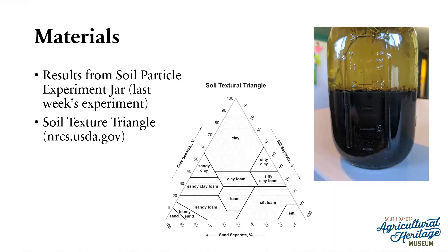The other thing you will need is a soil texture triangle, pictured in the middle of the screen. I got mine from the NRCS website at nrcs.usda.gov, where you can find a soil textural triangle. Today I'm going to show you how to take your results from the experiment and use the triangle to determine your soil type. It looks a little intimidating at first, but once you get the hang of it, it's pretty easy and straightforward.